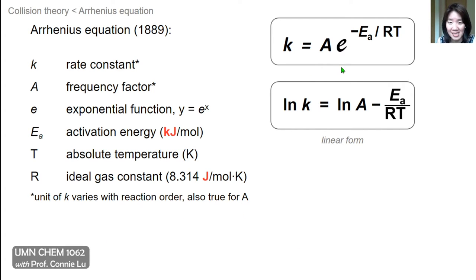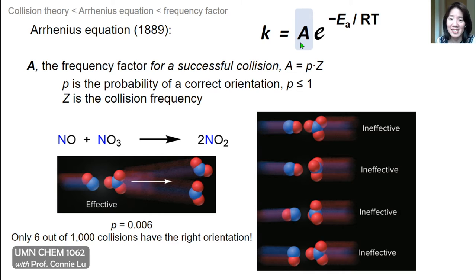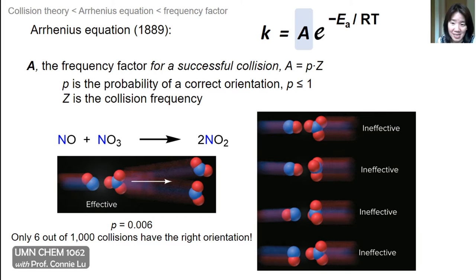The frequency factor A is basically the probability for successful collision. A itself is a product of P and Z, where P is the probability of a correct orientation — a value usually less than or equal to 1, with 100% being the maximum — and Z is the collision frequency. For example, in the reaction where nitric oxide and nitrate must directly collide to form two molecules of nitrogen dioxide...